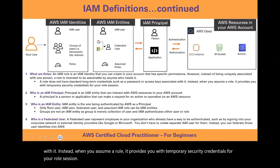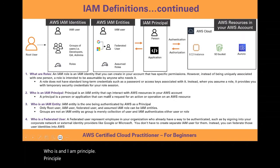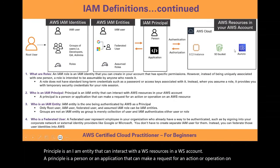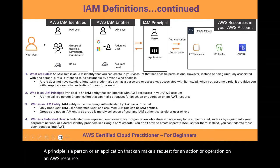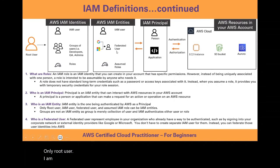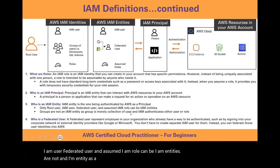Who is an IAM principal? A principal is an IAM entity that can interact with AWS resources in your AWS account. A principal is a person or an application that can make a request for an action or operation on an AWS resource. Who is an IAM entity? An IAM entity is the one being authenticated by AWS as a principal. Only the root user, IAM user, federated user, and assumed IAM role can be IAM entities. Groups are not an IAM entity, as a group is merely a collection of users, and IAM authenticates either the user or the role.